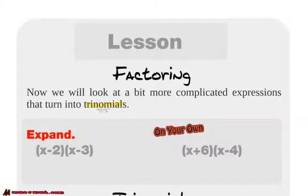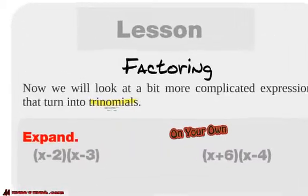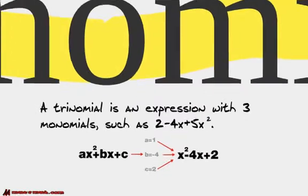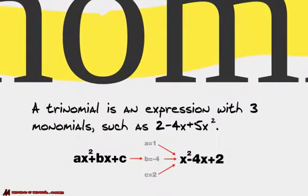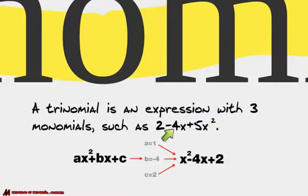Alright, factoring. We've looked at factoring before, but now we're going to look at a little bit more complicated expressions that we're going to call trinomials. A trinomial is an expression with three monomials — three terms in it. When you simplify it down, it gets to three terms.